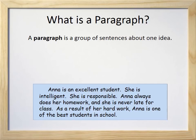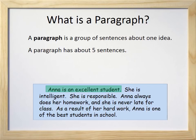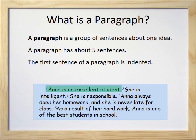Remember, a paragraph is a group of sentences about one idea. The sentence that tells us the one idea this paragraph is about is: Anna is an excellent student. That sentence tells us what the rest of the paragraph is about. So how many sentences are in a paragraph? A paragraph has about five sentences. Sometimes you can have fewer and sometimes more, but usually five sentences is a good number. You can see that our example has exactly five sentences. And remember, the first sentence of a paragraph is indented — that means there's a space before the sentence.